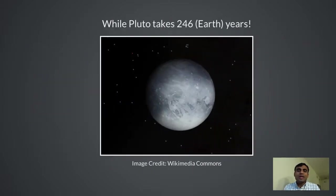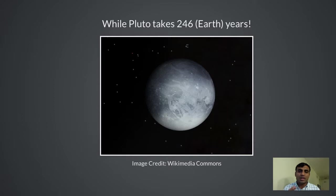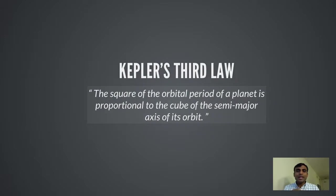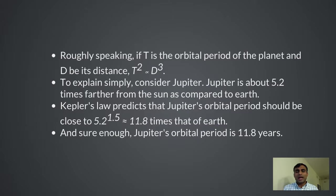Consider Pluto — Pluto takes 246 Earth years to orbit the sun. If we lived on Pluto, we would not see even one year before we die, and even our great-great-great ancestors' descendants would barely see a new year. Kepler found there was a relationship between the distance of a planet from the sun and its orbital period, and this became his third law.